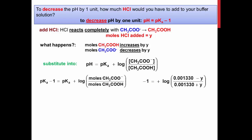Substituting everything back into the Henderson-Hasselbalch equation gives the expression pKa minus one equals pKa plus the log of the moles of acetate minus Y divided by the moles of acetic acid plus Y.